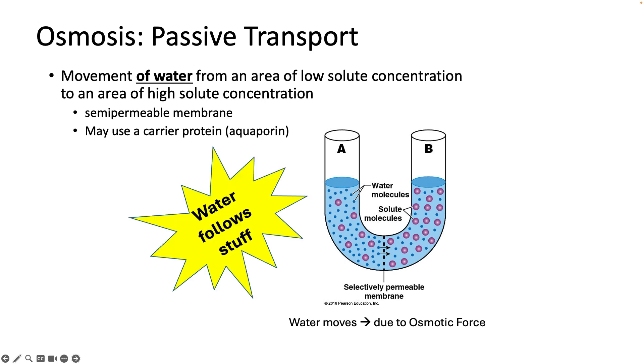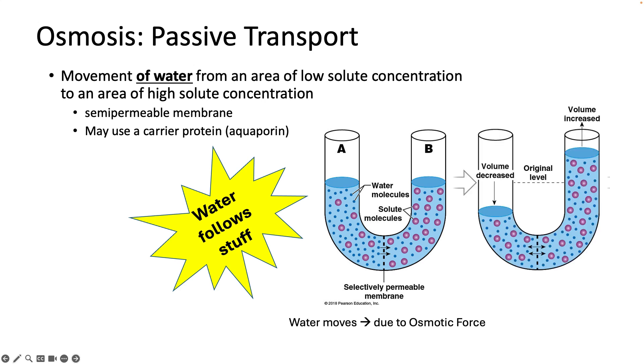Over time in this tube, you will observe that as the water moves towards the stuff, the level of water on the right will go up. We have now diluted the stuff on the right by adding water to it, and water has been removed from the area on the left—it's concentrated now. At some point, the concentration on both sides will be equal and there will no longer be any osmotic force. This is what we call equilibrium.